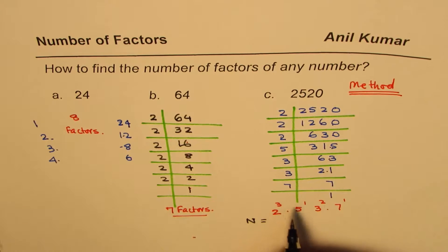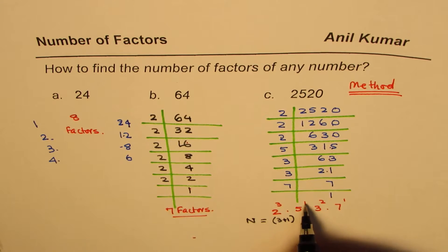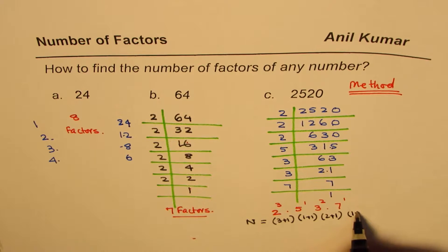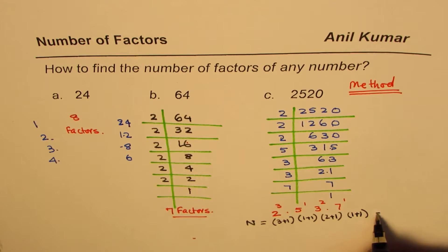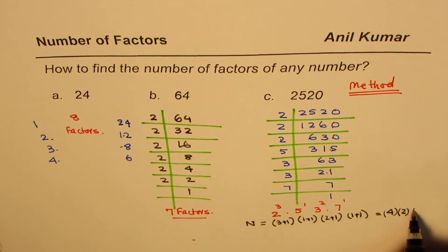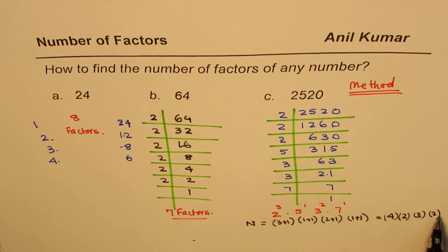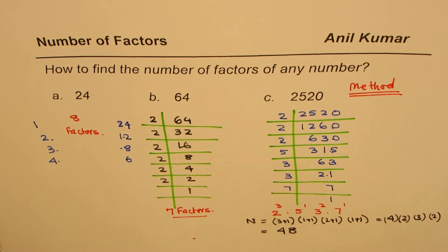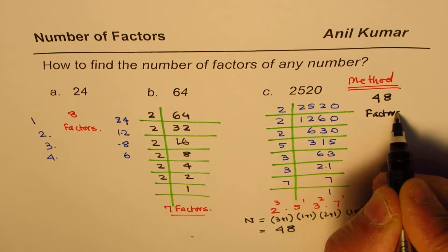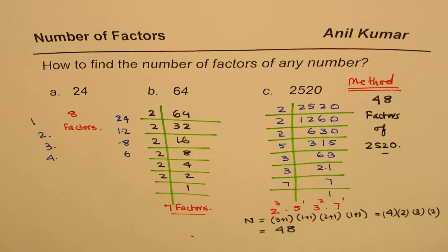Now to find the total number, let's call that total number to be N. N is actually related with these exponents. So if it is 3, I write 3 plus 1 times. If it is 1, I write 1 plus 1. And if it is 2, I write 2 plus 1. And if it is again 1, I write 1 plus 1. So that gives me total number. So it is 3 plus 1 is 4, and then times 2, and then times 3, and then times 2. That should be my answer. 4 times 2 is 8, 8 times 3 is 24, times 2 is 48. So what I get here is 48. So my answer for this is that we have 48 factors of 2520. Now, I may be right, I may be wrong, but that's what I get.